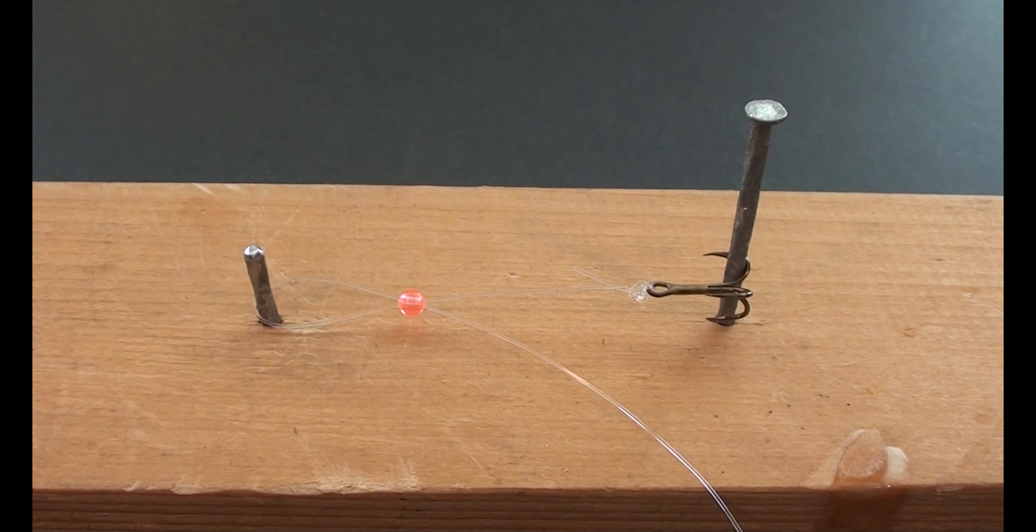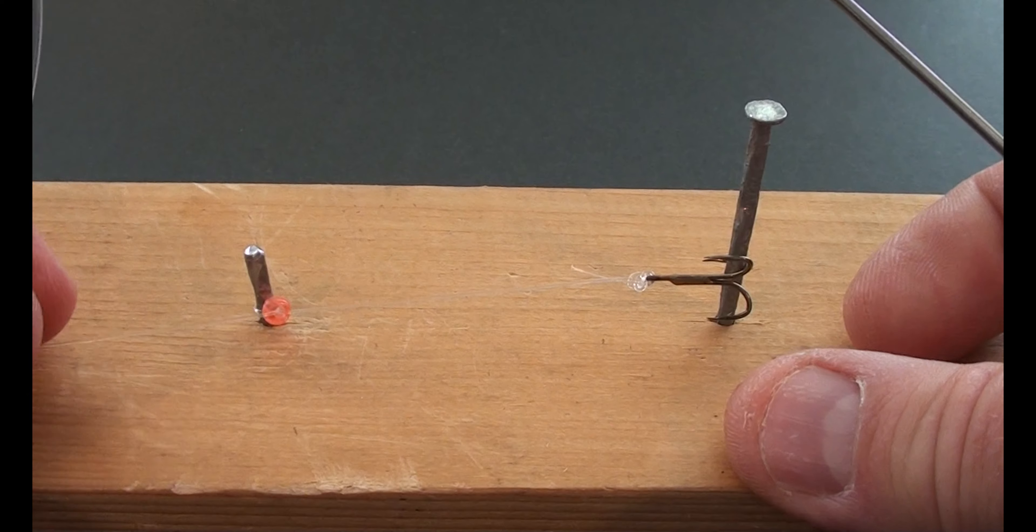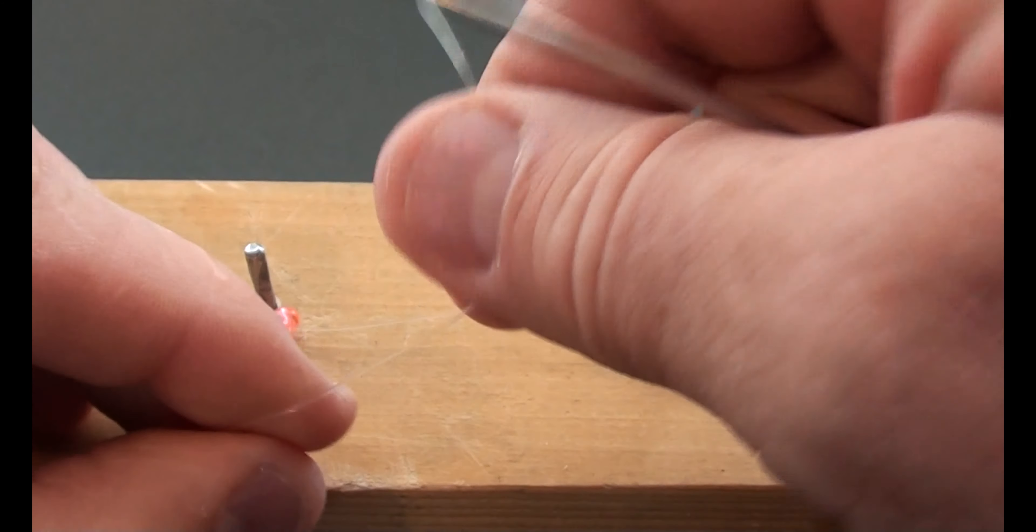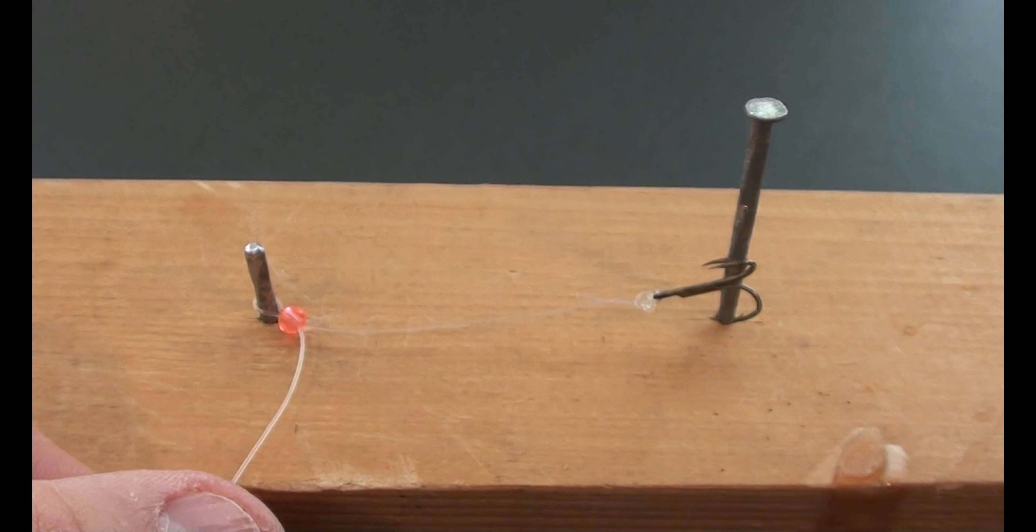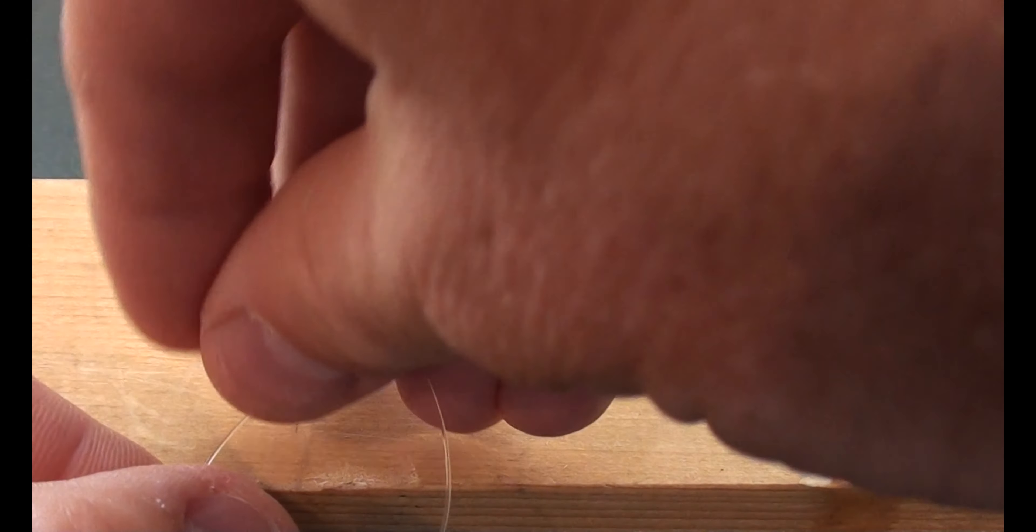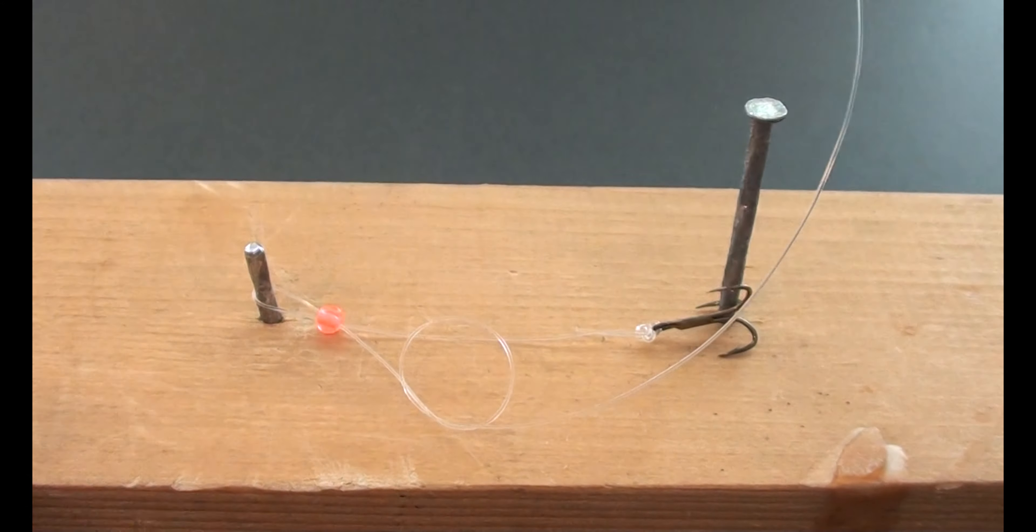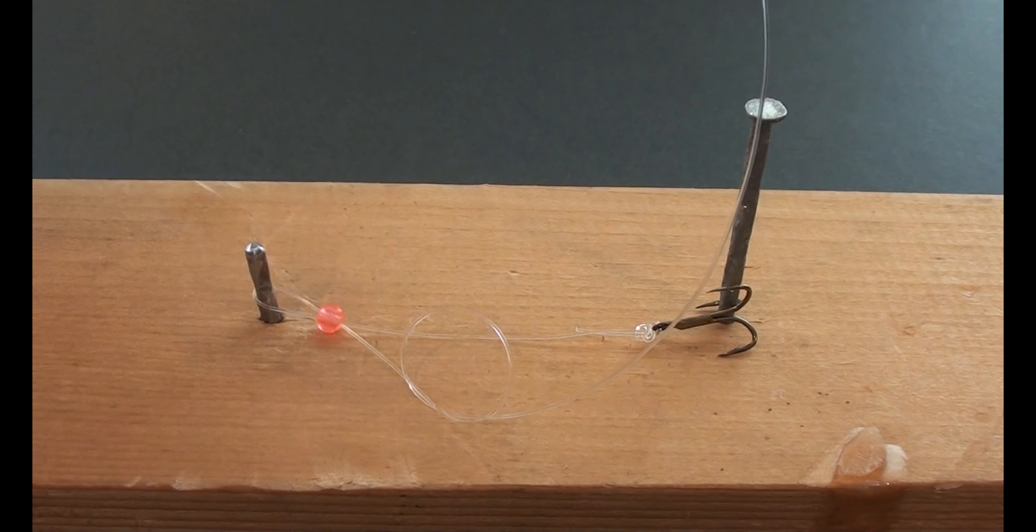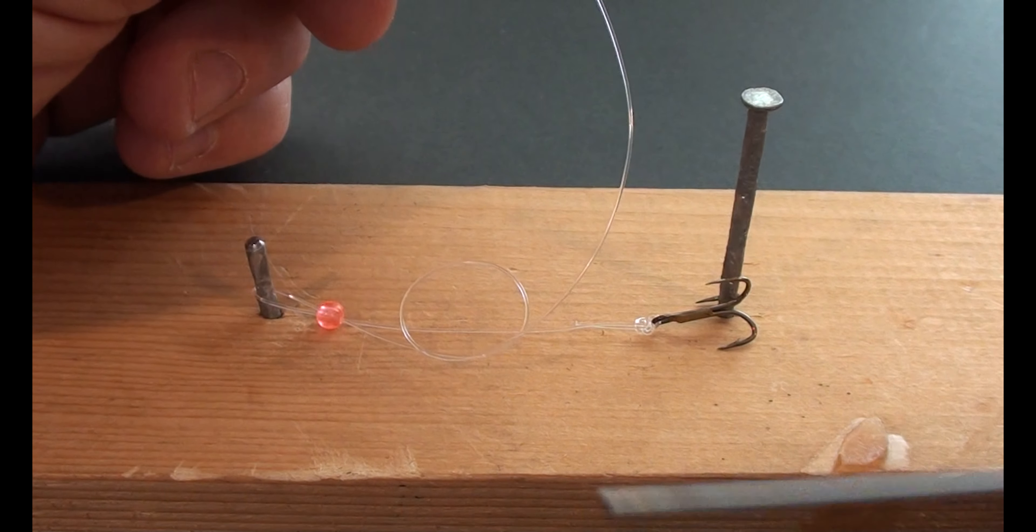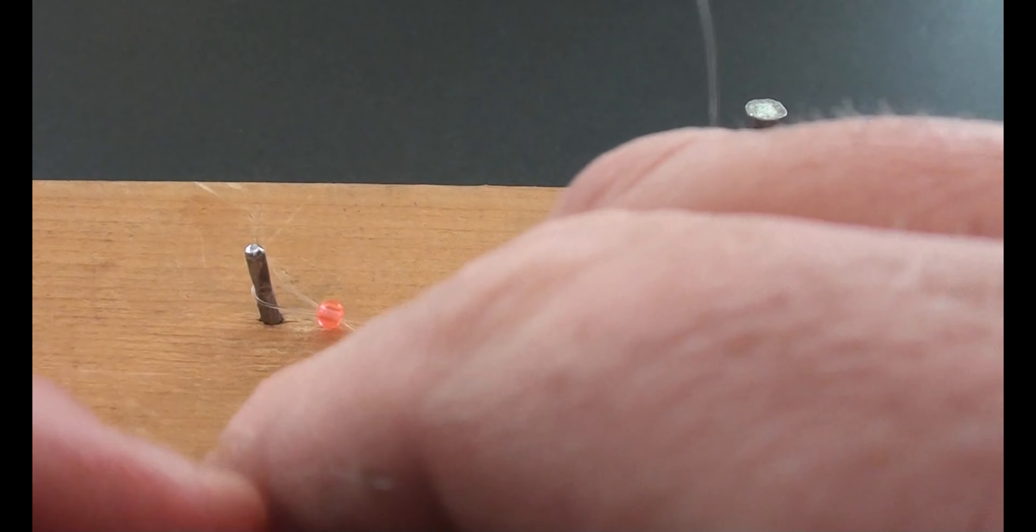So the next step is that we're going to make a knot in the tag end of the line. Just a simple overhand knot is all we need. And this is the reason that the bead diameter needs to be slightly larger than two diameters of line, because we want this knot once it's cinched down to not be able to pass back through that bead. So that's why the hole in the bead is important.